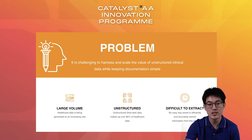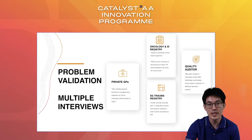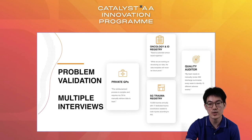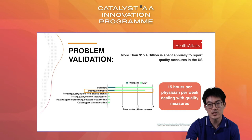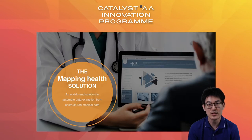The problem that us clinicians face is that it's challenging to harness and scale the value of unstructured clinical data while keeping documentation simple. Healthcare data is large, unstructured, and difficult to extract. We have validated our problem by holding multiple interviews and we would like to focus on the auditor in the quality office who needs to manually review 400 discharge summaries per week just to identify 15 different adverse events. This problem is also sizable — Health Affairs in 2016 reported that more than $15 billion is spent annually just to report quality measures in the United States. Notably, 15 hours is spent per physician per week dealing with quality measures, and it has been estimated that if this were done away with, the physician would be able to treat nine additional patients per week. At this point, I would like to hand over to Hanif, who will talk about our Mapping Health solution and also give a demo of our prototype.